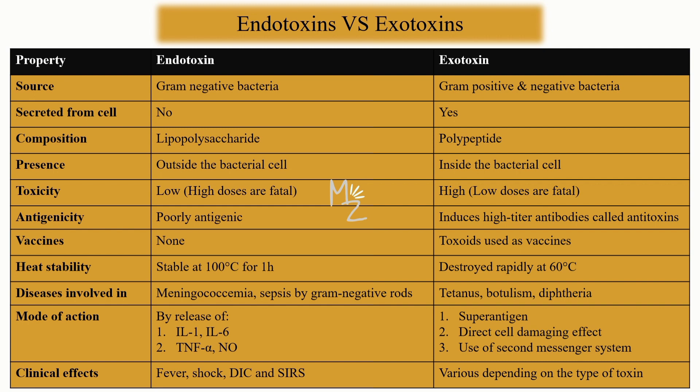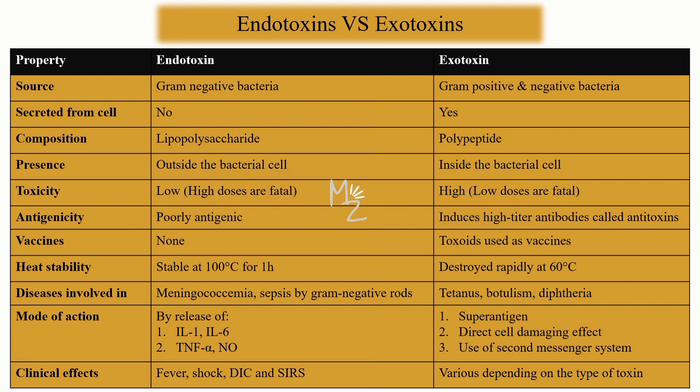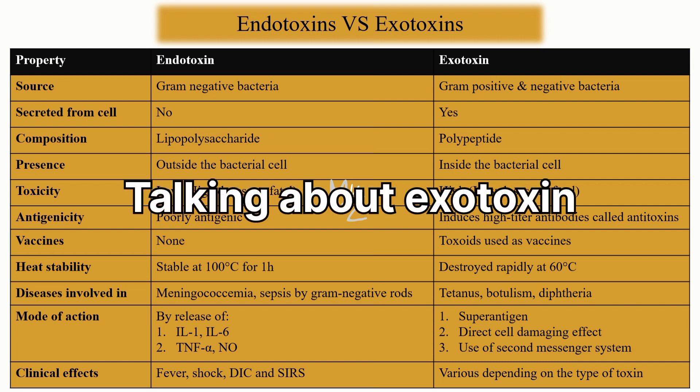The clinical effects of endotoxin include fever, shock, disseminated intravascular coagulation (DIC), and systemic inflammatory response syndrome (SIRS). I have a 7E formula for endotoxin in a separate video — find its link in the description.